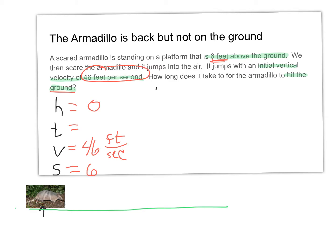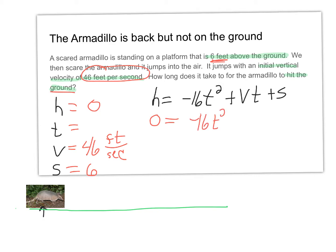Let's set up our formula. H equals negative 16 T-squared plus VT plus S, since we're using feet. Filling in what we know: 0 equals negative 16 T-squared plus 46T plus 6. That's our vertical velocity of 46T and our starting height of six feet.